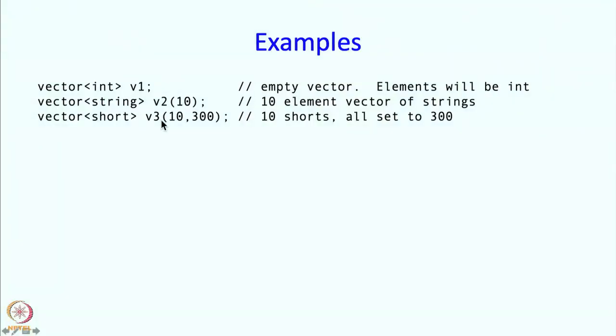This has a more interesting constructor. First of all it is a vector of shorts. v3 is going to have 10 elements. But if you have this additional argument, this says that the values of all the elements will be 300. So v3 will store 10 copies of 300, one per element. I can write an assignment and copy vectors directly. Vectors are like structures, they are classes. But they also have parts which are on the heap. Typically the data is all on the heap.